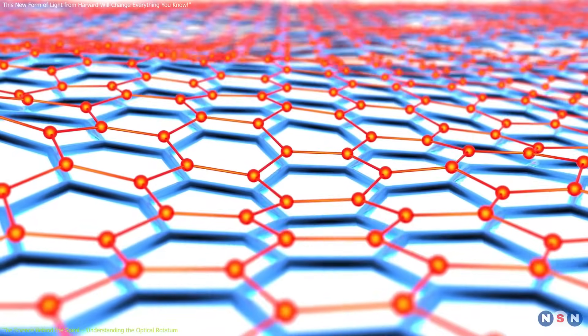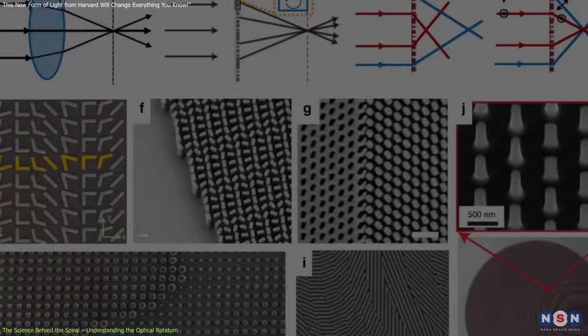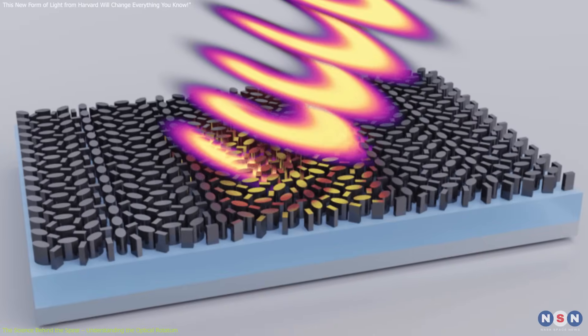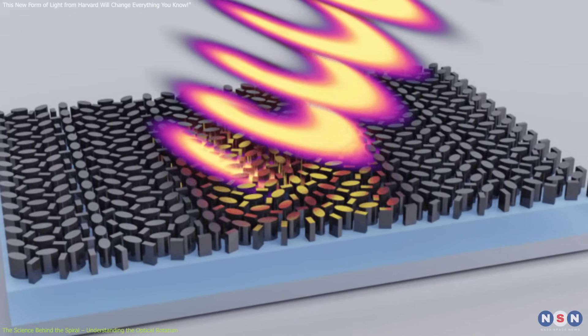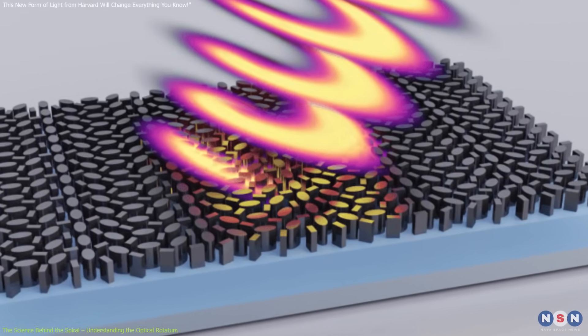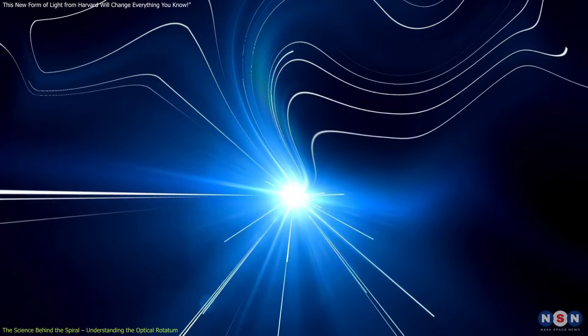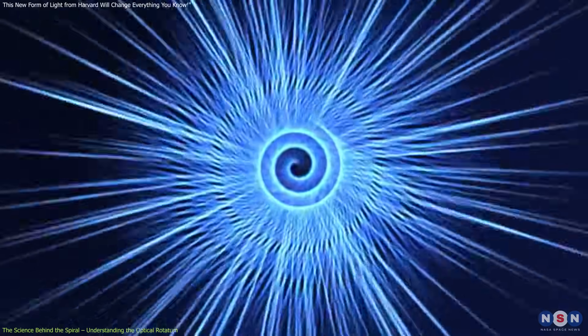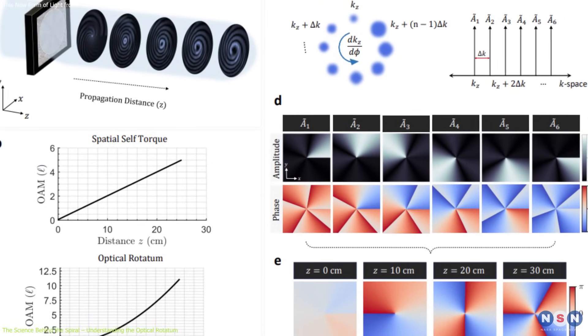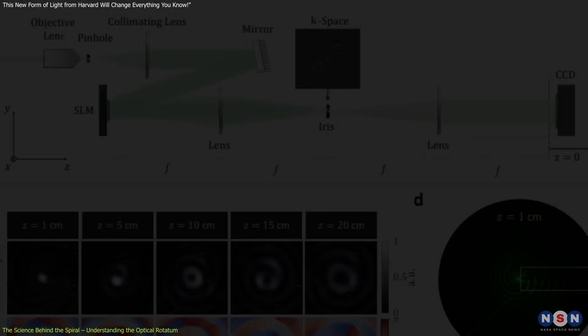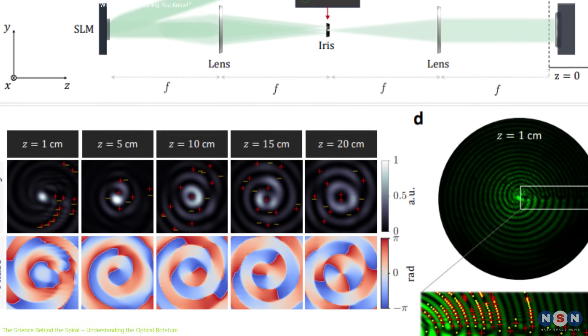This variation is achieved through the use of metasurfaces, ultra-thin materials engineered with nanoscale structures that can manipulate light in precise ways. By designing a metasurface that imparts a specific phase profile to the incoming light, researchers can control the beam's OAM, causing it to change in a predetermined fashion as it travels. In the case of the optical rotatum, the metasurface induces a quadratic chirp in the beam's OAM, leading to the characteristic spiral pattern.